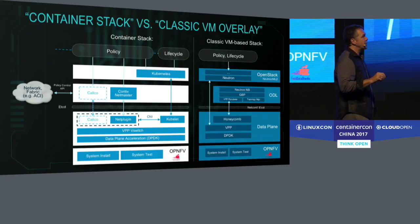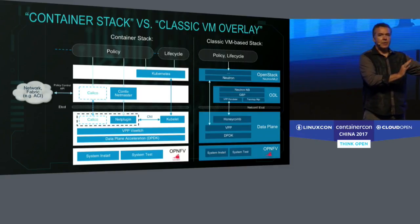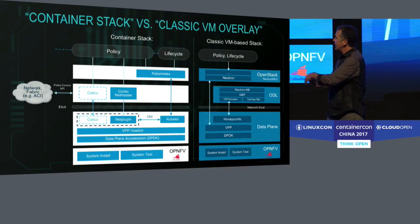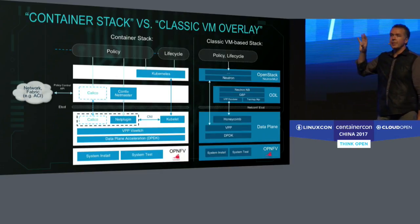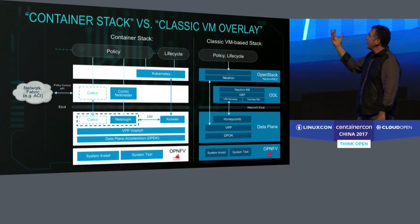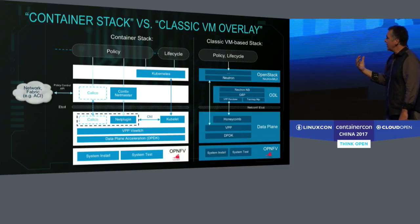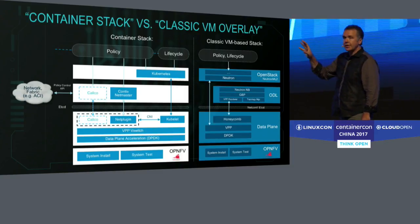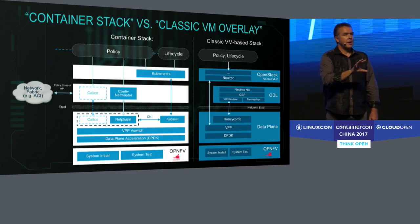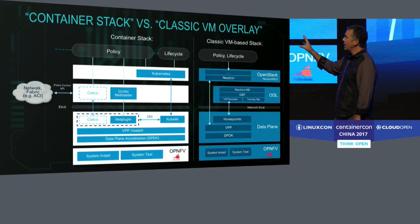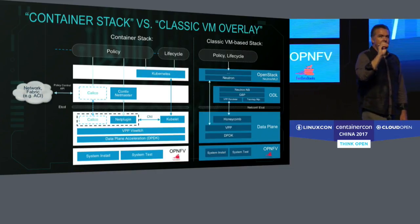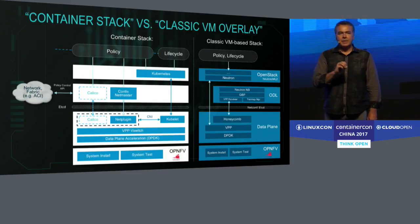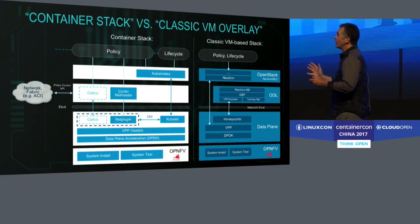You can see the classic VMware/VM stack on one side and the classic container stack on the other. What's really interesting is the separation of lifecycle management from policy management at the top. In the classic VM-based stack looking at OPNFV, the policy point in the middle is OpenDaylight. On the container side, there is no policy point yet available — an open source project called Contiv is one example, with several others in this space — and that policy point becomes how compute, network, storage, and security end up getting optimized together, which doesn't exist in a uniform way inside the container stack today.